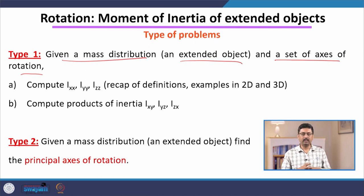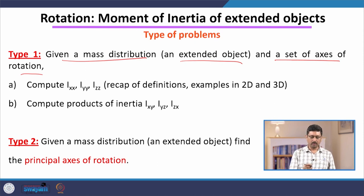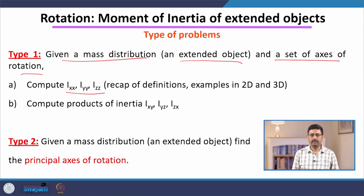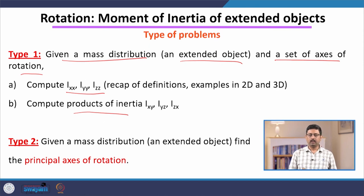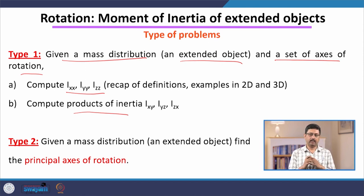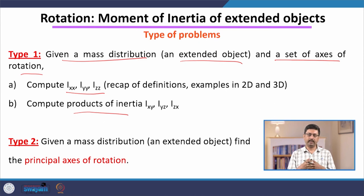First we are going to recall something you may be familiar with from your high school physics course — the simple definition of moment of inertia. But then we are also going to introduce a probably new term called products of inertia, which are the different components of moment of inertia. Moment of inertia is an example of a quantity that is neither a scalar nor a vector. The nature of the quantity will be more clear in the next week when we discuss the laws of rotational motion.